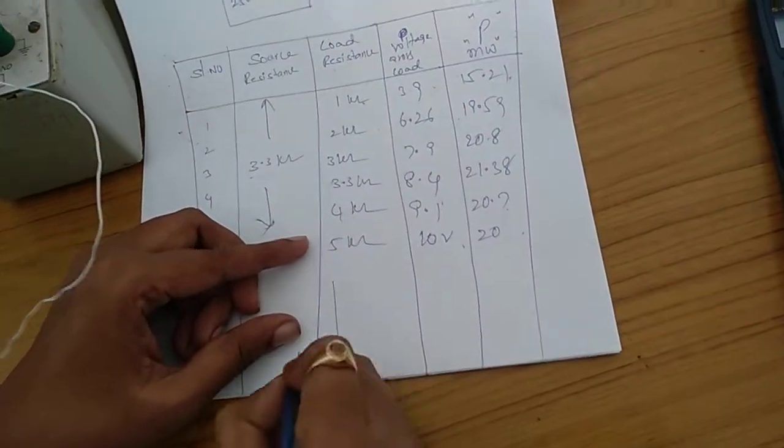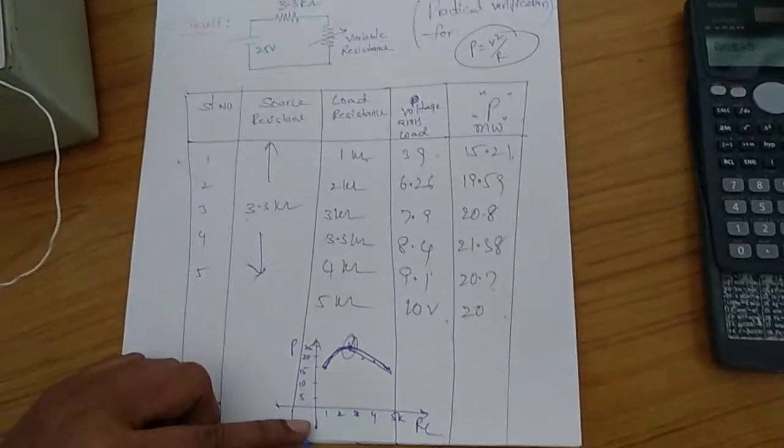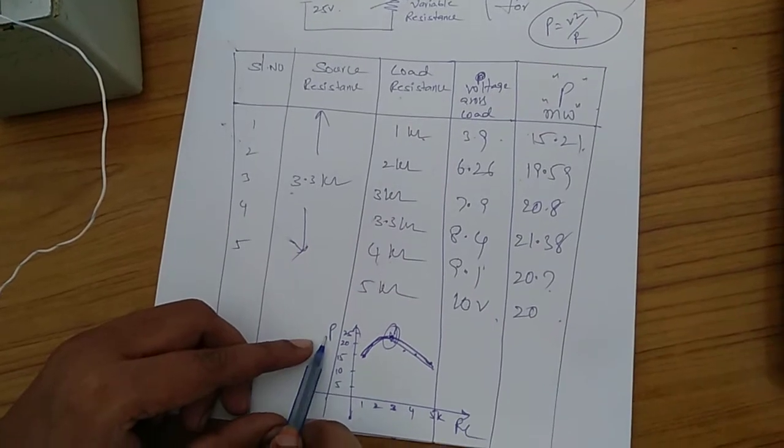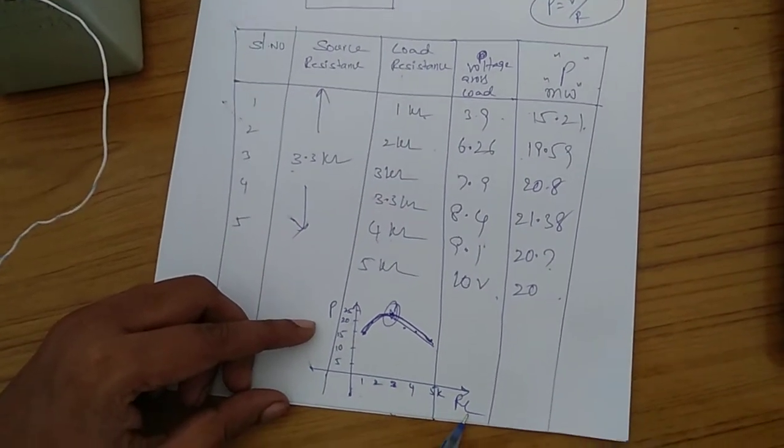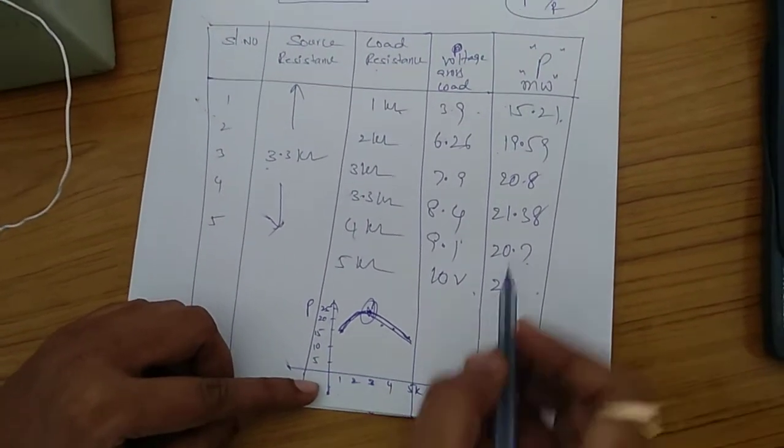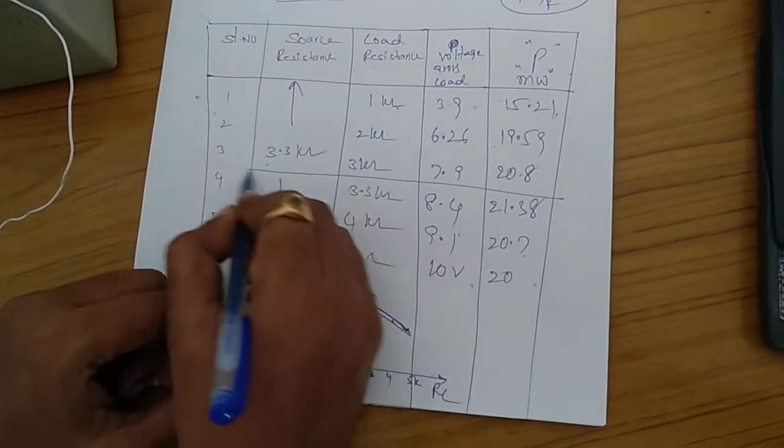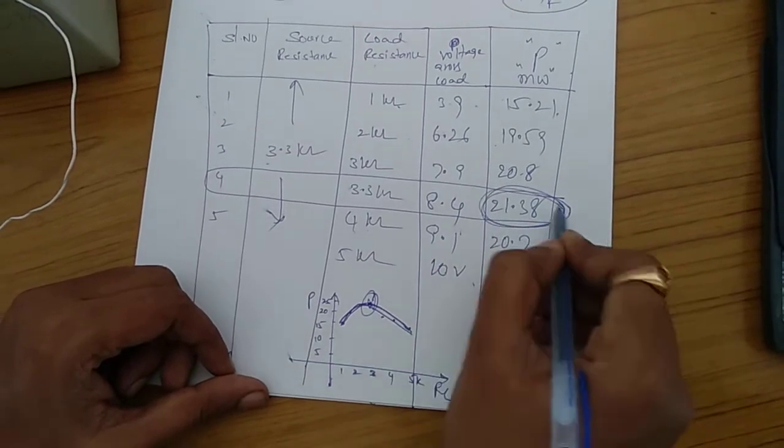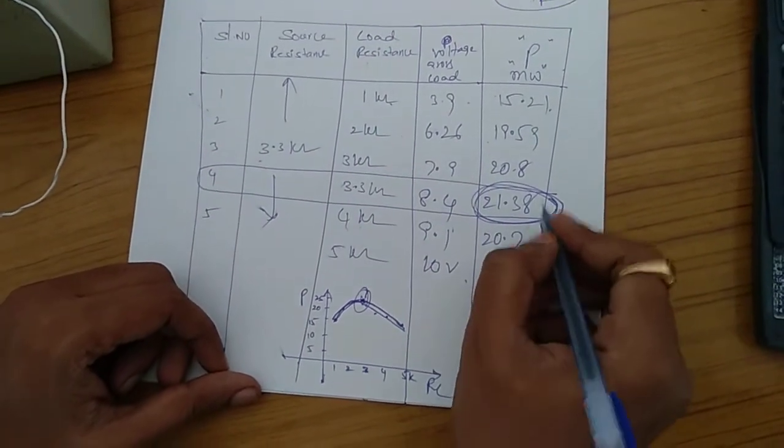And if you construct a curve, maximum power versus load resistance, when load resistance equals source resistance at 3.3 kilo ohms, we are getting the maximum power of 25.38 milliwatts.